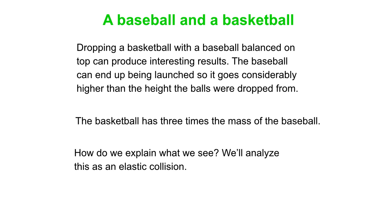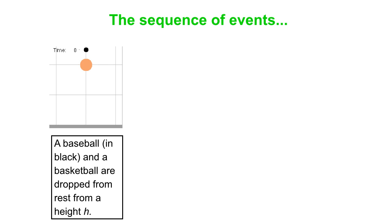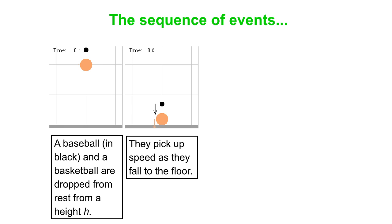How do we explain what we see? We're going to analyze this as an elastic collision. We'll take you through the sequence of events. Here's a picture showing initially what's going on, the baseball is above the basketball. Usually when you drop it, you sit the baseball on top of the basketball and let them go from rest. Here we've separated them just to see what's going on and break the system down. A lot of things actually happen simultaneously, but we're going to assume they happen in sequence.